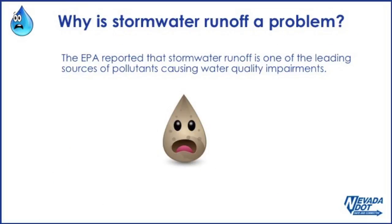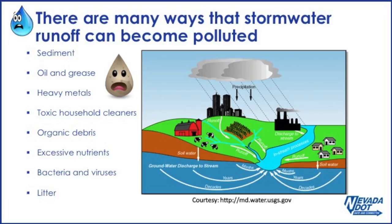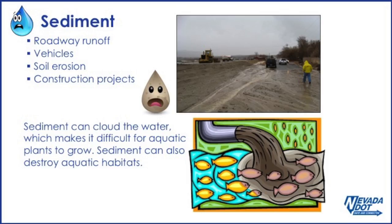The Environmental Protection Agency reported that stormwater runoff is one of the leading sources of pollutants causing water quality impairments. There are many ways that stormwater runoff can become polluted. Sediment from roadway runoff, vehicles, soil erosion, construction projects, and other sources can cloud the water, which makes it difficult for aquatic plants to grow.